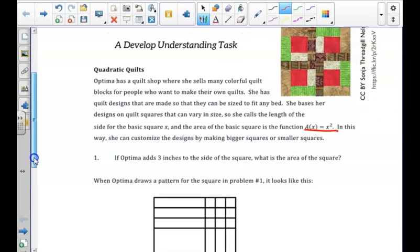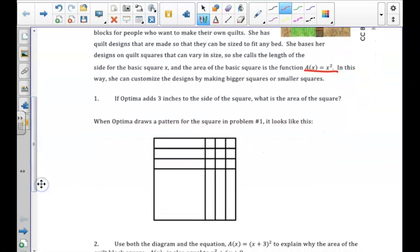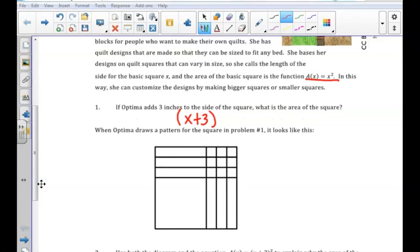We explored in number one that if she adds three inches to each side of her square, she would be designing a square with an x plus three side length. Therefore, we can write that as the quantity (x + 3) to the power of two, or (x + 3)².